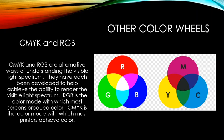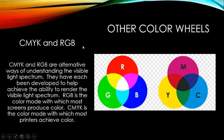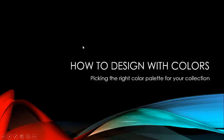CMYK is the color mode most printers use. If you're printing your work, use the CMYK color mode. RGB stands for red, blue, green; CMYK stands for cyan, magenta, yellow, and K for black.